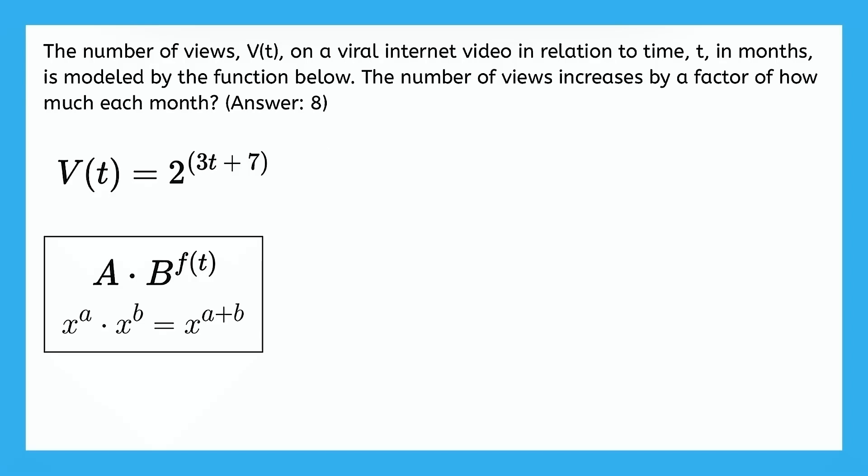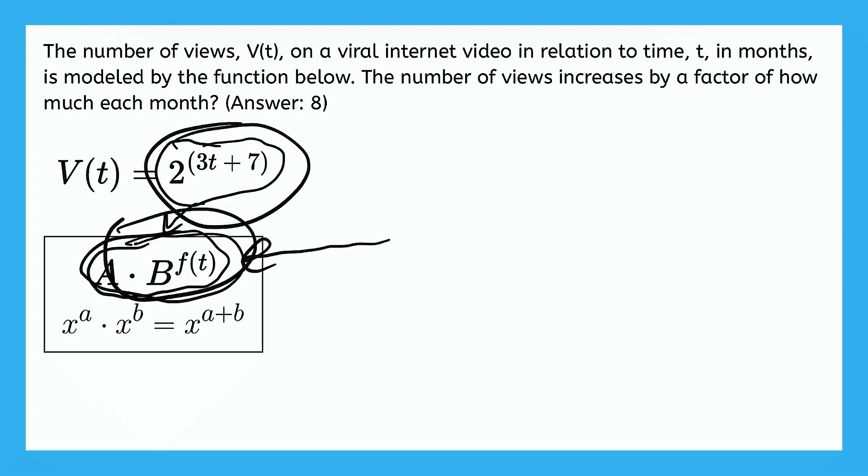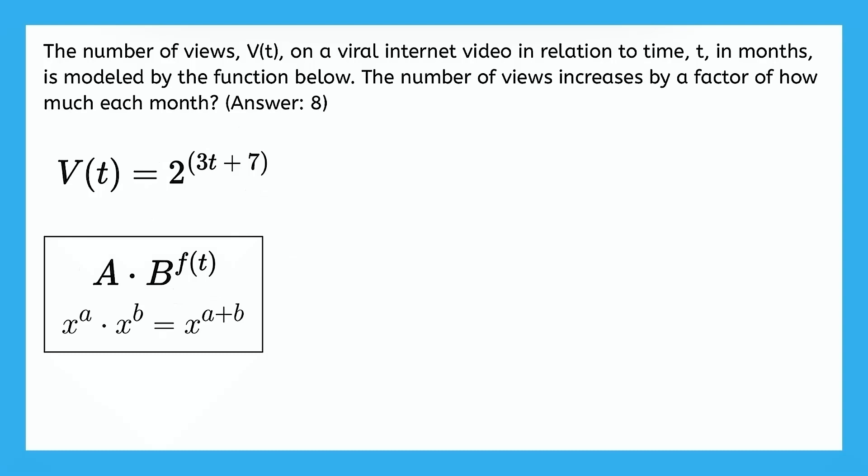So if somehow we can make this expression right here look like this expression right here, we'll be able to analyze it because we know how to interpret an exponential model when it looks like this right here. But how do we make this expression look like that? Well, the expression that we're given looks like x to the power of a plus b. And according to the properties of rational exponents, we can rewrite this expression as x to the power of a times x to the power of b.